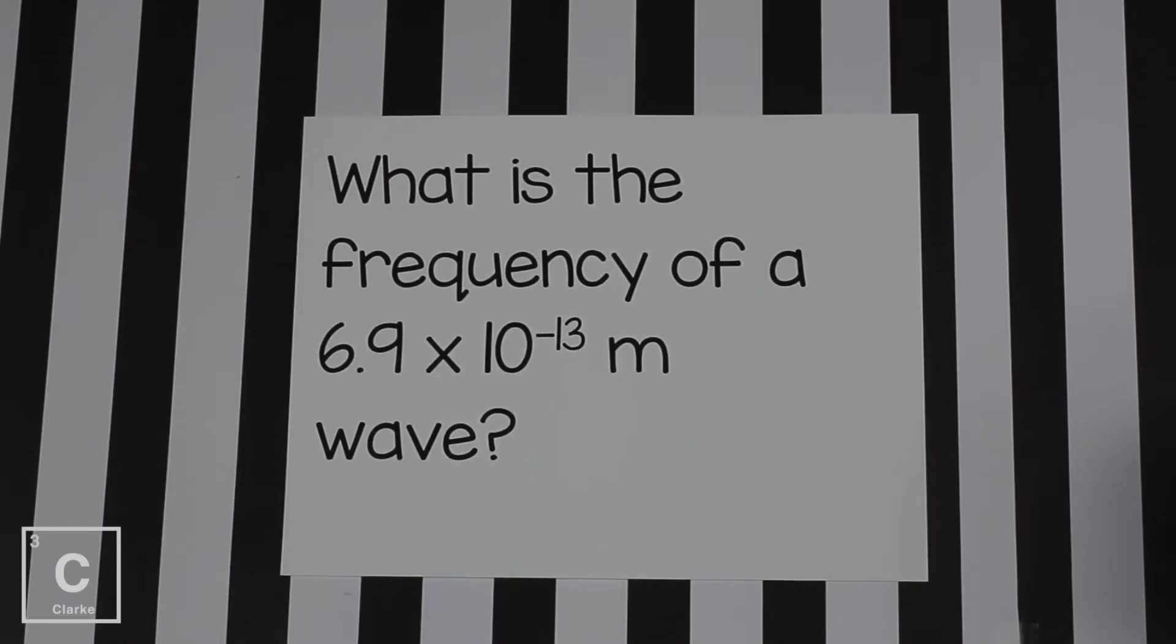Let's do another example. This example, we're going to be given the wavelength and we're going to solve for frequency. So we're going to use the same formula. Speed of light equals wavelength times frequency. Let's set our problem up.